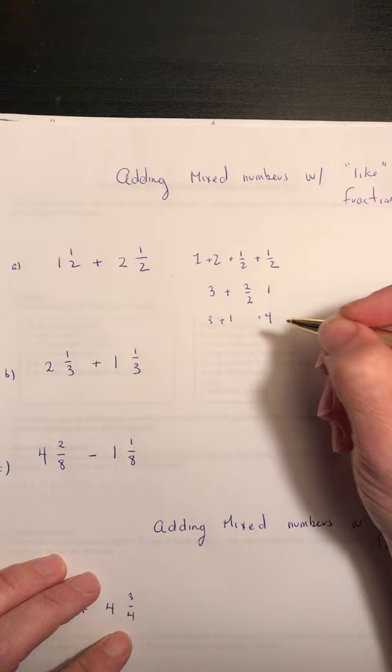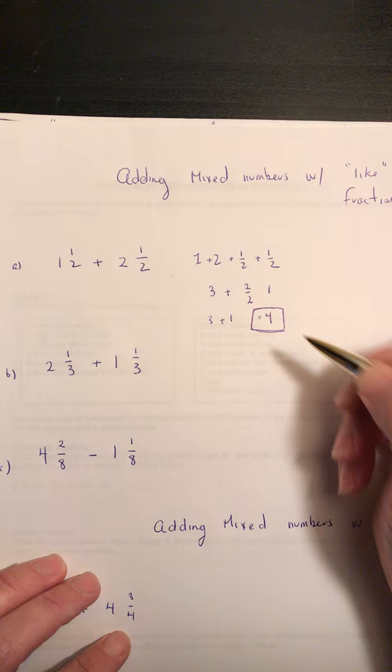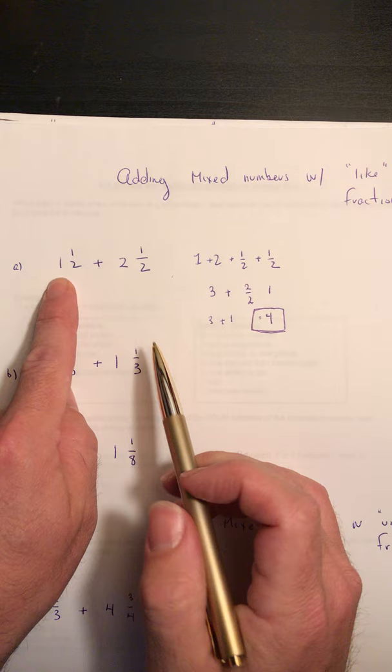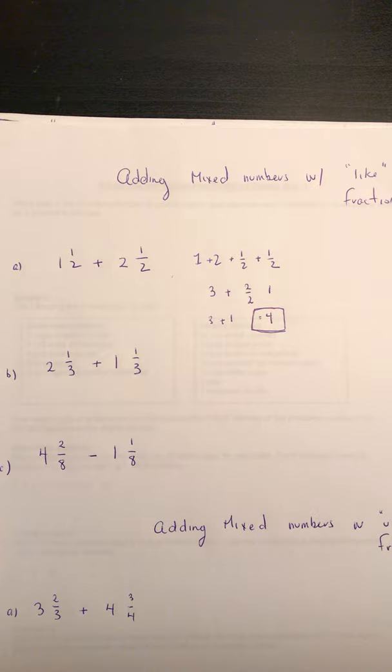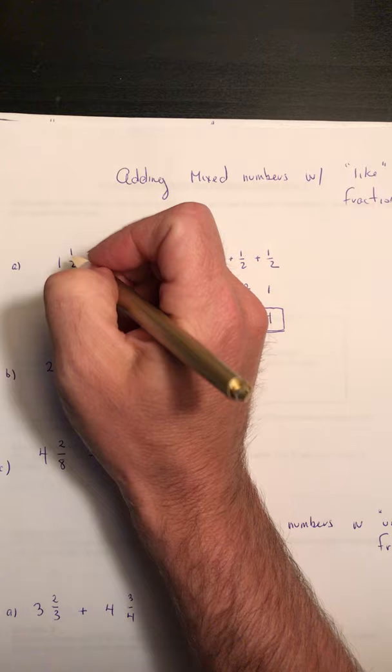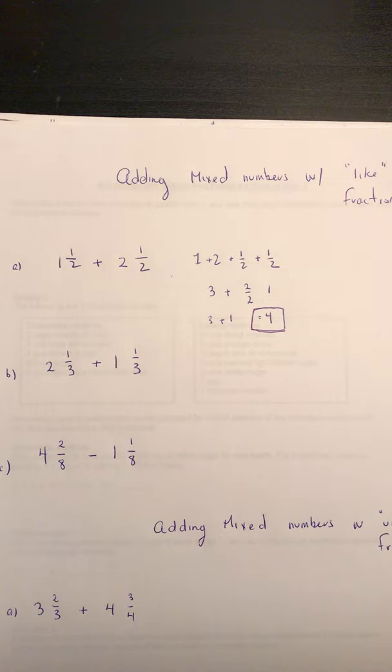Think about it this way: you've got one pizza and a half a pizza, plus two pizzas and a half a pizza. One plus two is three pizzas, and you've got a half pizza plus another half pizza — put them together, you get a full pizza, so you've got four pizzas altogether. Or think of it as one and fifty percent plus two and fifty percent: fifty percent plus fifty percent is a hundred percent, so you've got four.